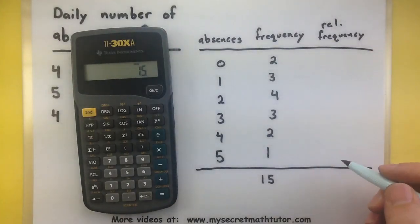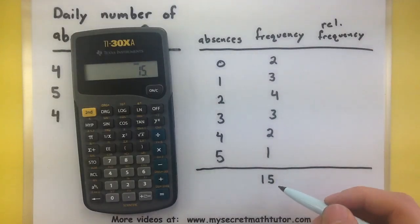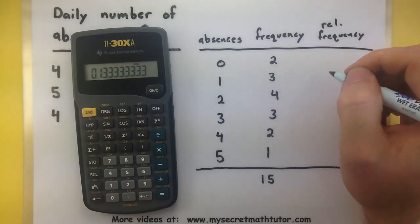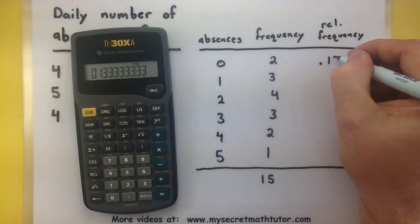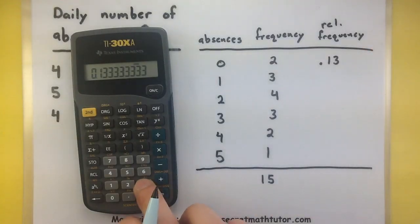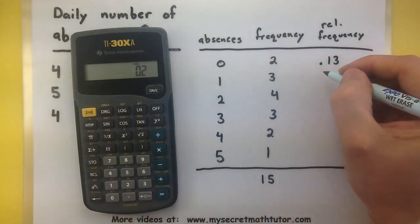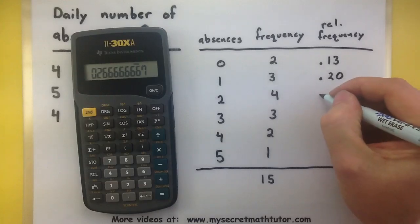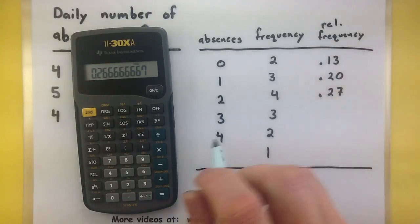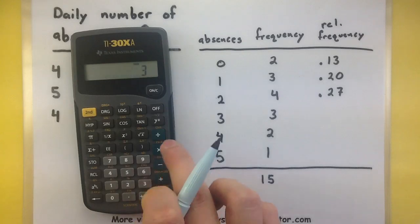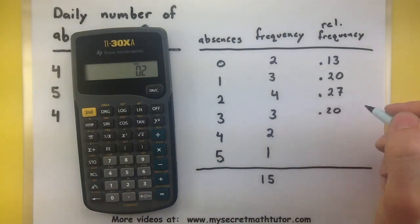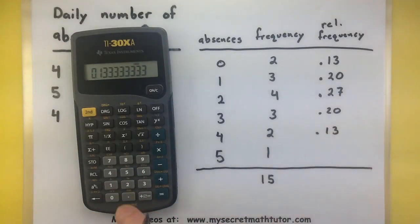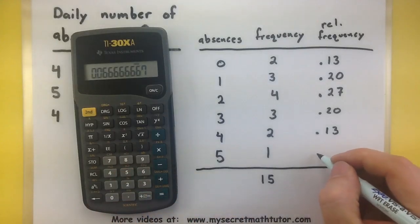All right, let's make some relative frequency. We'll take each of these values and divide it by the total frequency, so 2 divided by 15. So I'm getting 0.33 repeating, and I'm going to round this to just 0.13. On to the next one, 3 divided by 15, so 0.20, 0.27. So I'm rounding this one up, 0.20, 0.13, and 0.07.